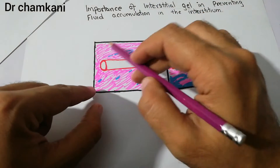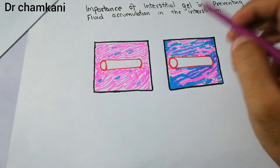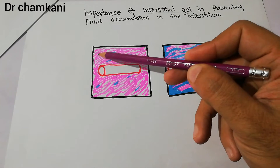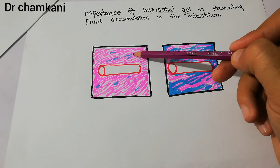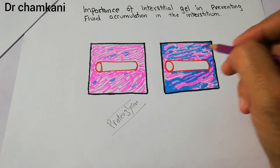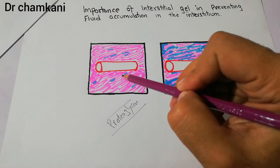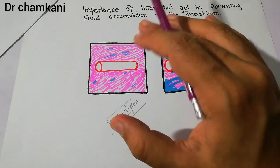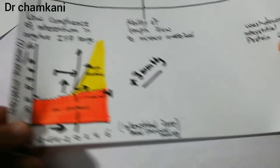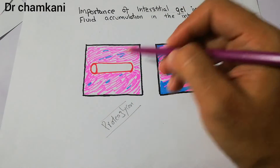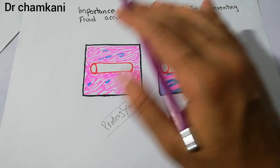The interstitium is in the gel form, and this gel form is very helpful in preventing fluid accumulation under normal circumstances. The gel form simply means that there are very small amounts of fluid tightly packed in the proteoglycans. Proteoglycans are a combination of proteins and carbohydrates, and they do not allow the free movement of fluid. This small amount of fluid accumulated in the proteoglycans gives a gel appearance to the interstitium — the interstitial gel — which contributes to low compliance and prevents the movement of free fluid.